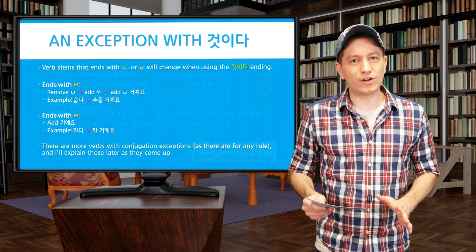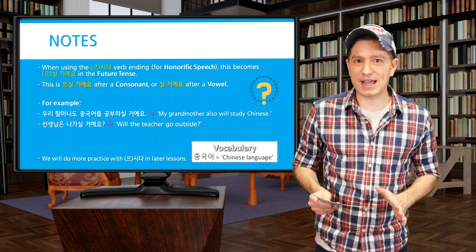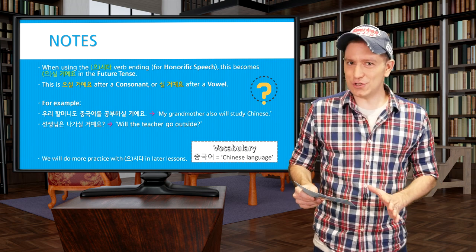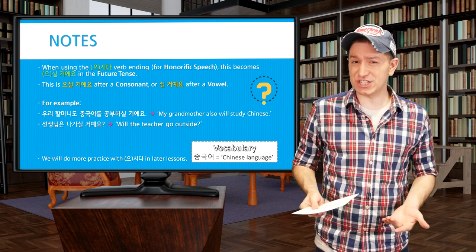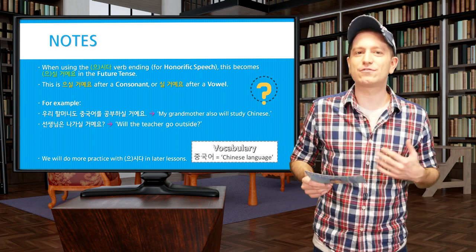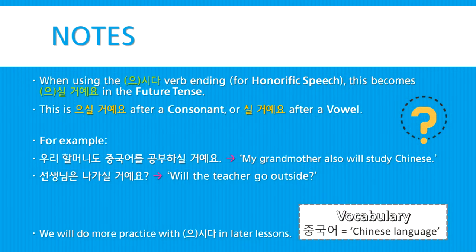A quick note about using the honorific verb ending 으시다 in the future tense. This will become 으실 거에요 when it comes after a consonant, or just 실 거에요 when it comes after a vowel. Here are two examples: 우리 할머니도 중국어를 공부하실 거에요 — My grandmother also will study Chinese. 선생님은 나가실 거에요 — Will the teacher go outside? We'll do more practice with this 으시다 ending in later lessons.